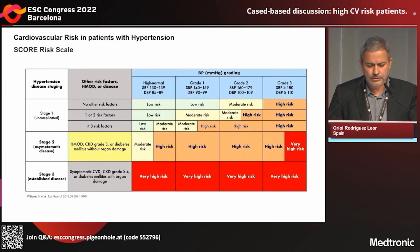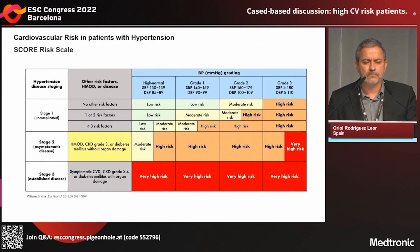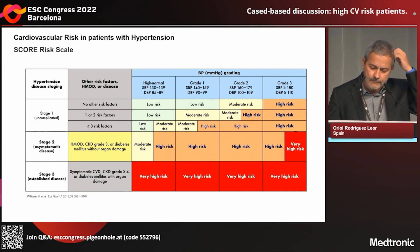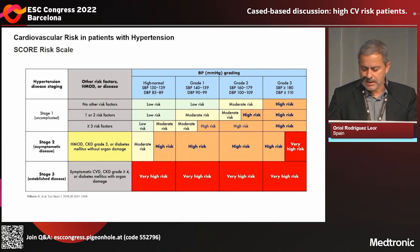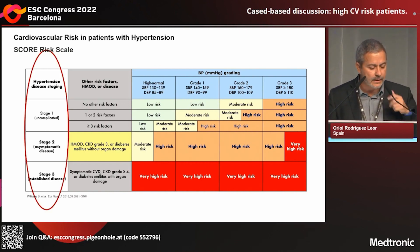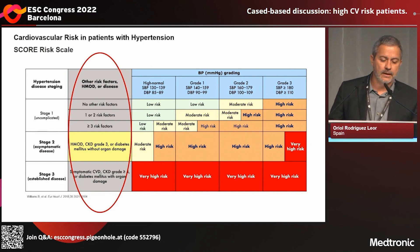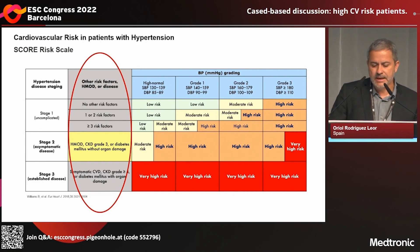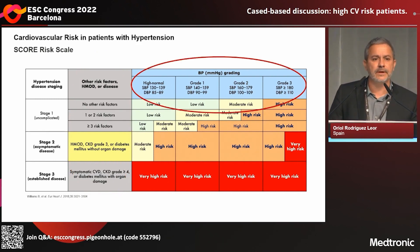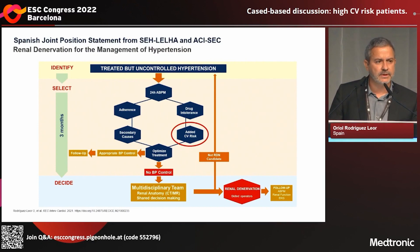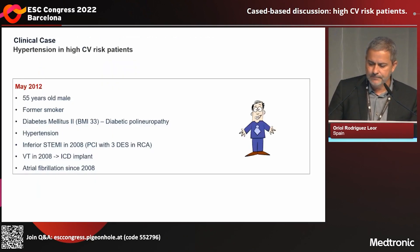Thank you, good morning everybody. Cardiovascular risk is a multifactorial condition, well resumed in this cardiovascular risk assessment score. There are different stages of risk that depend on the presence of other risk factors, organ damage mediated by hypertension or cardiovascular disease, and this is also according to the grade of hypertension. So assessing cardiovascular risk is important when we are thinking about renal denervation in a patient and we have to take a deep look at it.